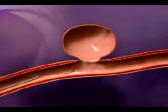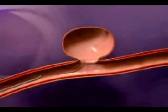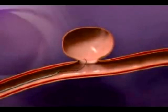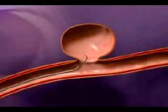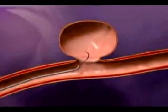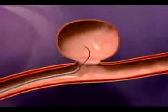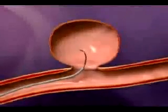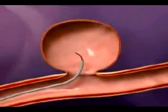A guide wire is introduced into the artery and enters the aneurysm. Next, a shaped Boston Scientific Target two-tip micro catheter is delivered into the aneurysm over the guide wire.